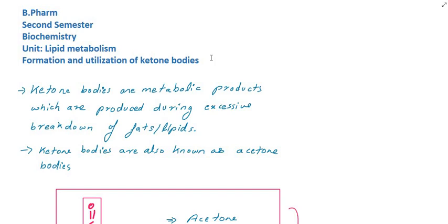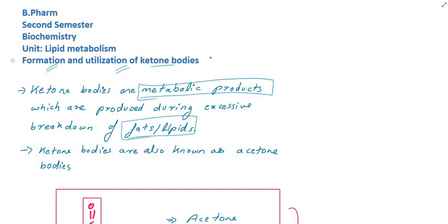In this session, we are going to talk about lipid metabolism and utilization of ketone bodies. Ketone bodies are the metabolic products. Lipid fats are also metabolic products, and ketone bodies are also known as acetone bodies.